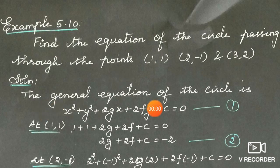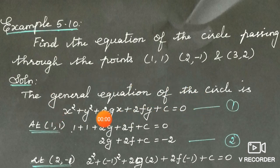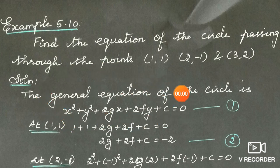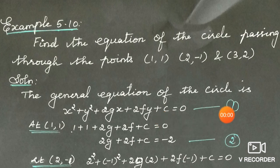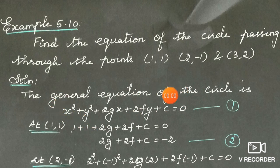Now you know the general equation of the circle. The general equation of the circle is: x² + y² + 2gx + 2fy + c = 0. That is the general equation of the circle. We need to find the g value, f value, and c value, and substitute them into the equation to get the required equation of the circle.